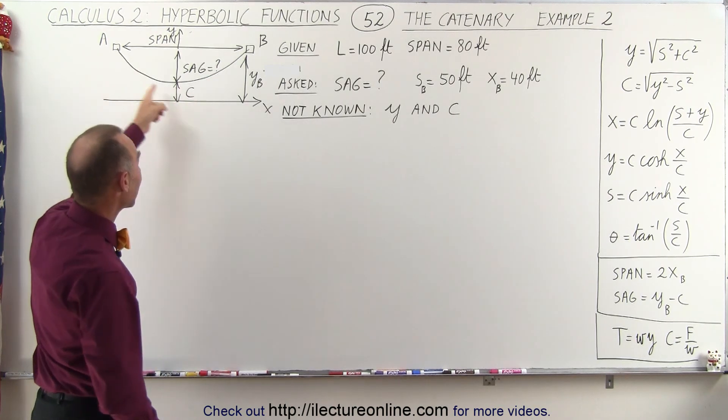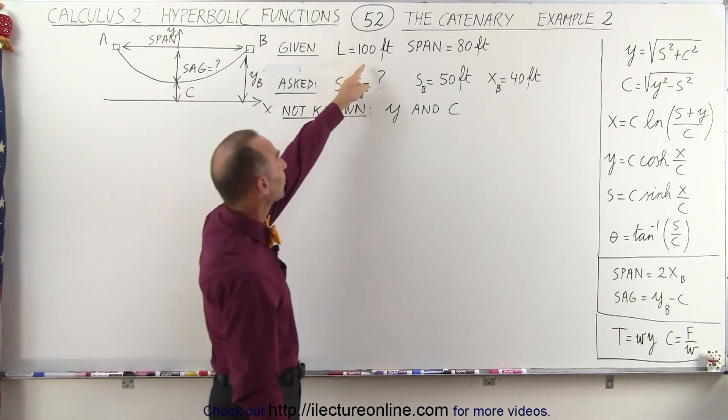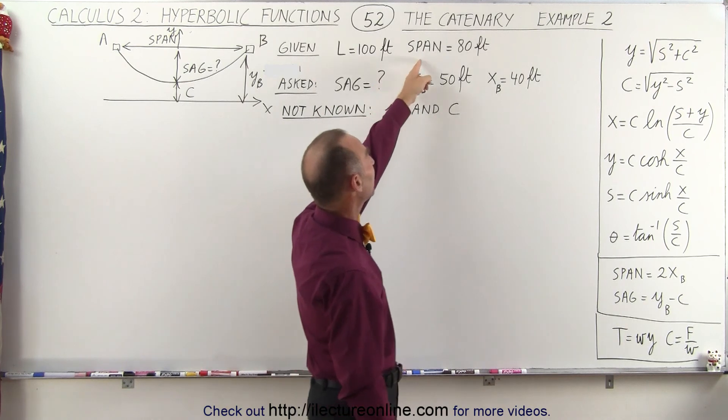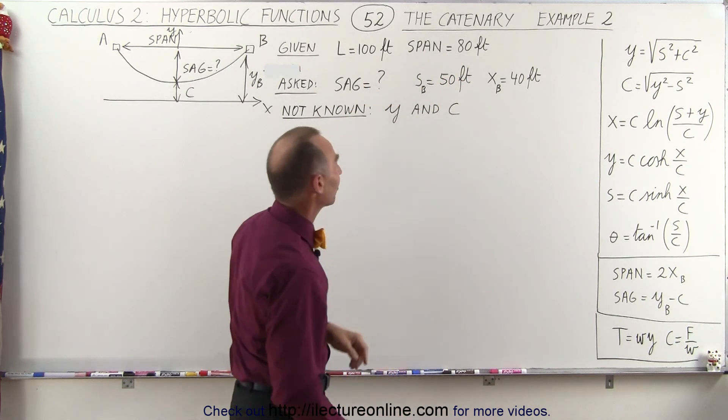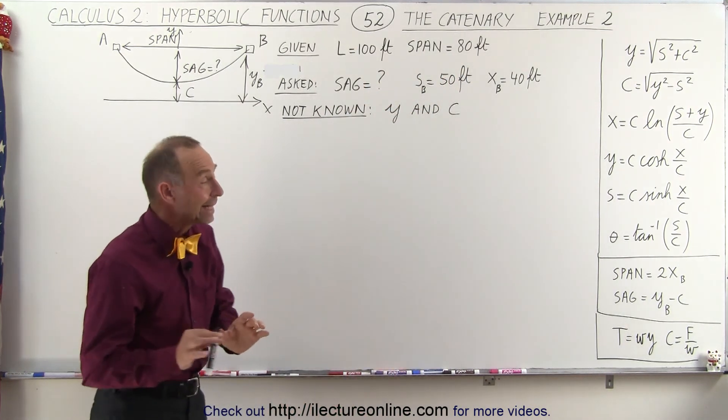So here again we have a hanging cable. We were given the length of the cable to be 100 feet and the span to be 80 feet and were asked for the sag. They did not give us anything else.